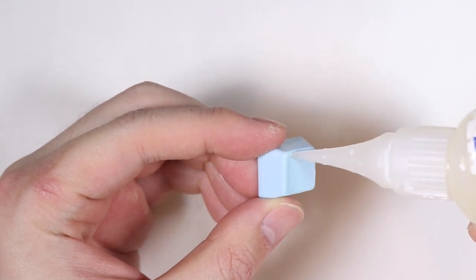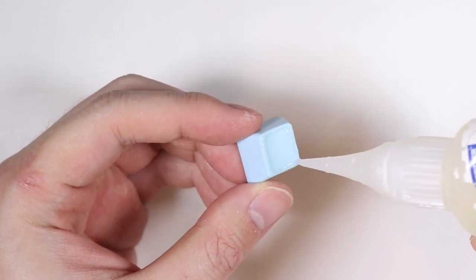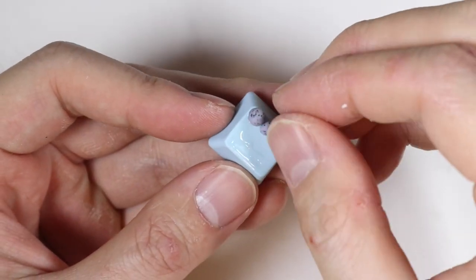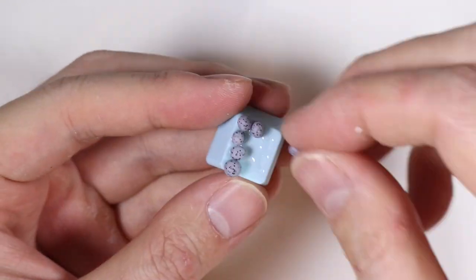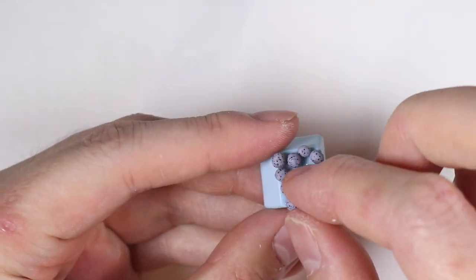So first I'm just putting a layer of liquid clay on the border of the keycap, and then I'm adding these little balls of granite clay, and this will be like the stones around the hot spring.